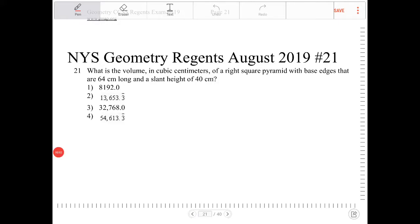What is the volume in cubic centimeters of a right square pyramid with base edges that are 64 centimeters long and a slant height of 40 centimeters?